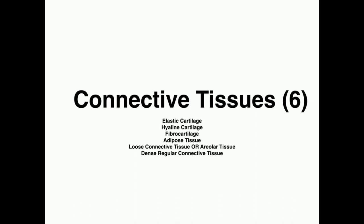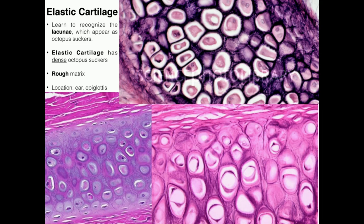Now we're going to go into the connective tissues. I think these are actually a little bit easier than the epithelial tissues — that's just my opinion. In this course we have six of them, and we're first going to look at the three types of cartilage.